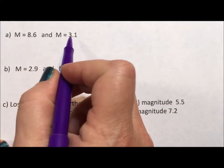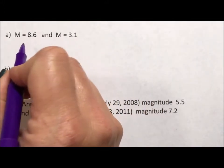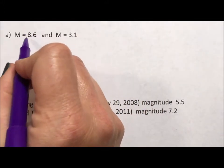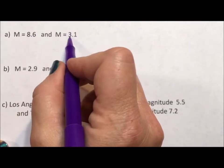the Richter scale is actually the exponents of 10. So the strength of this is actually 10 to the 8.6. That's how strong it is. This is actually 10 to the 3.1.